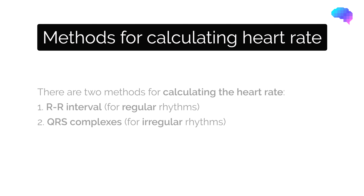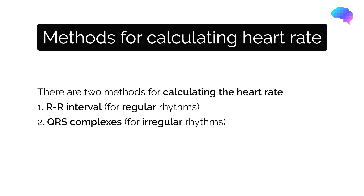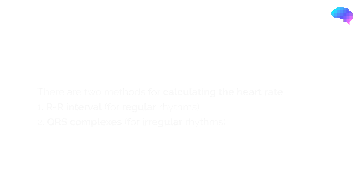There are two methods for calculating the heart rate, and the choice of these depends on whether the patient has a regular or irregular heart rhythm. Let's look at the first method using the RR interval. This method is suitable for regular rhythms.